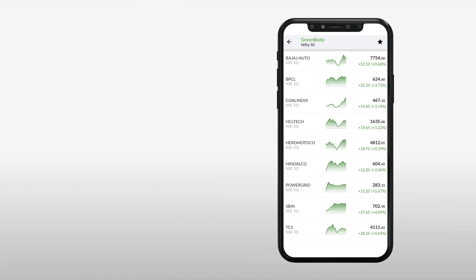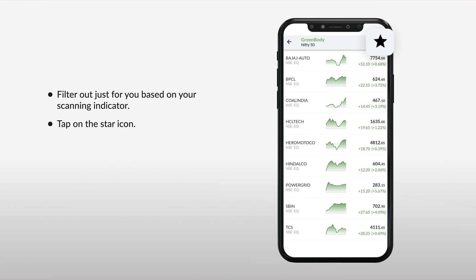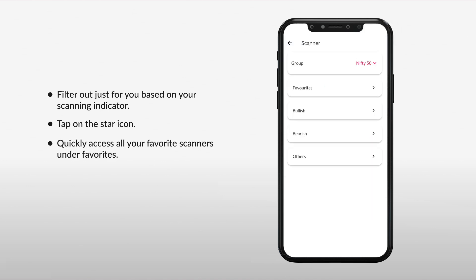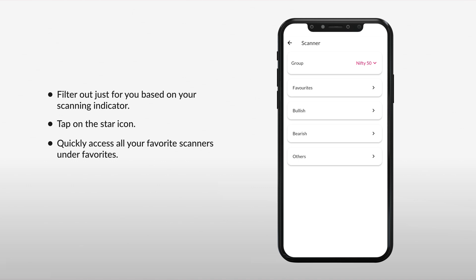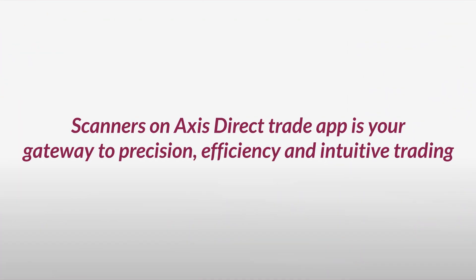You will now see all the stocks filtered just for you based on the scanning indicator you have selected. You can add this scanner to your favorites list by simply tapping the star icon, and quickly access all your favorite scanners under the Favorites menu. Similarly, you can choose different types of indicators based on your strategic trading or investment preference.